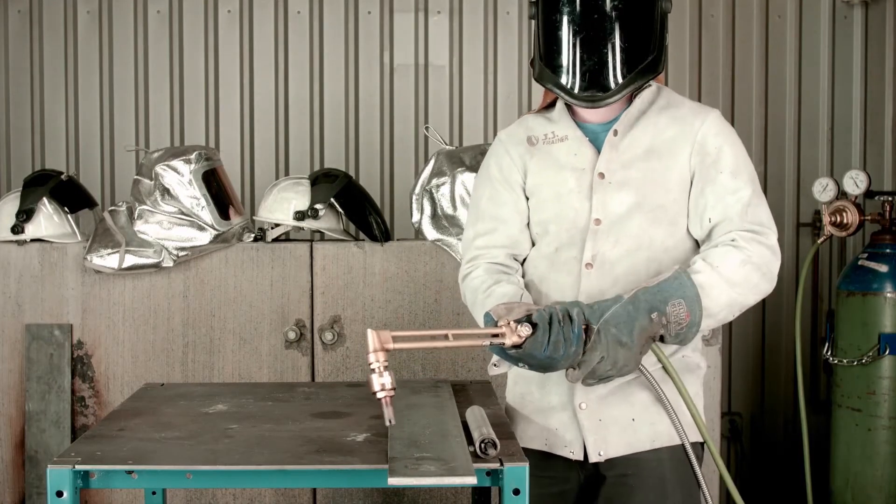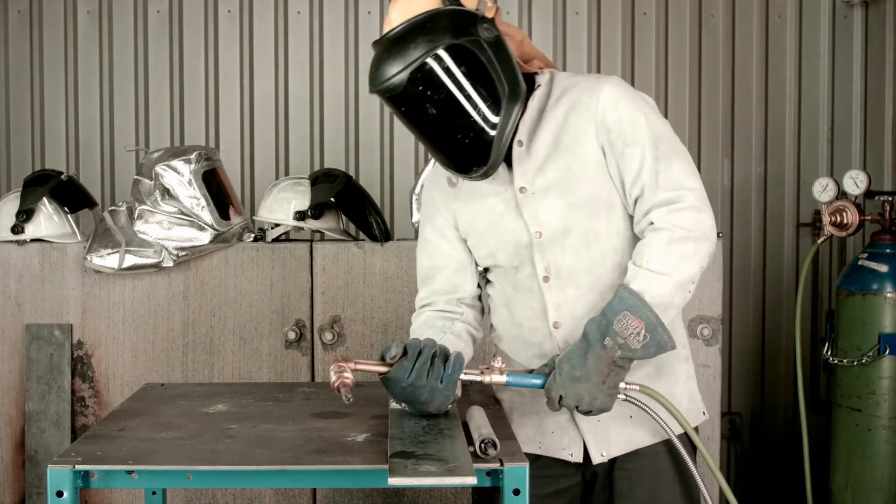To turn off the system, first turn off the fuel control knob, purge the torch, and turn off the preheat oxygen knob.